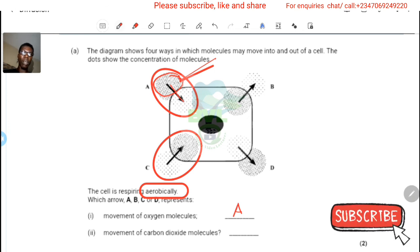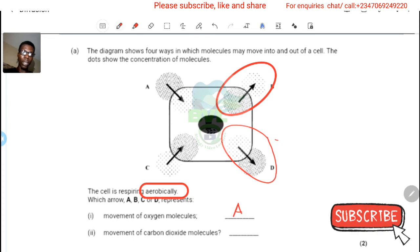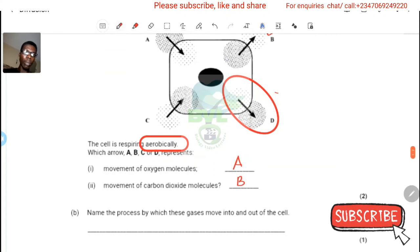For carbon dioxide movement, it's meant to move out of the cell. This is moving out, and this is also moving out. Carbon dioxide moves from higher concentration to lower concentration, and that would be here, so option B is correct. The process by which these gases move into and out of the cell is diffusion.